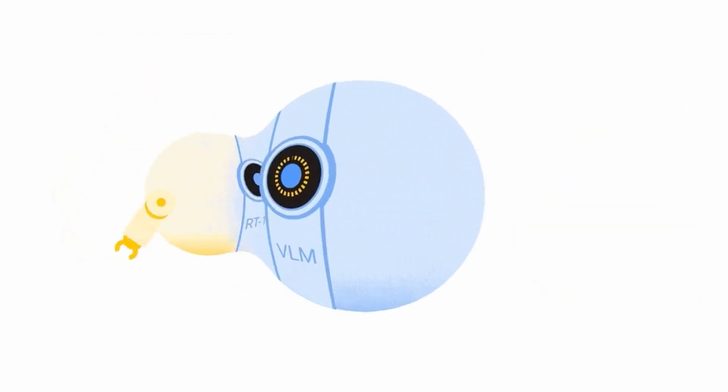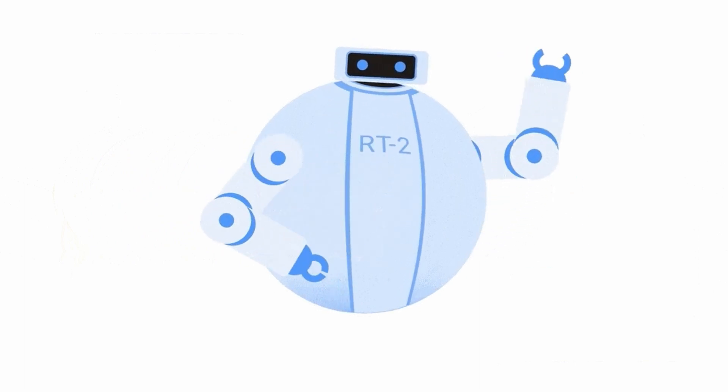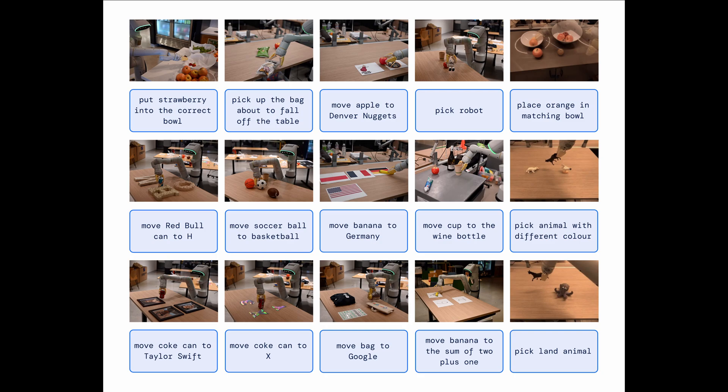This work builds upon Robotic Transformer 1, RT-1, a model trained on multitask demonstrations, which can learn combinations of tasks and objects seen in the robotic data. More specifically, our work used RT-1 robot demonstration data collected with 13 robots over 17 months in an office-kitchen environment.